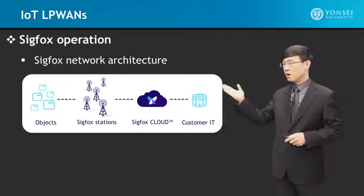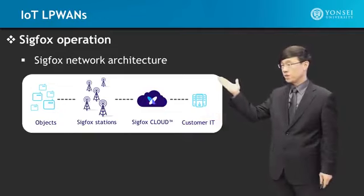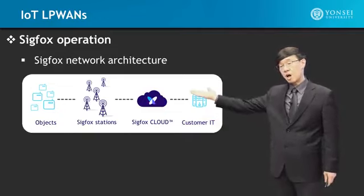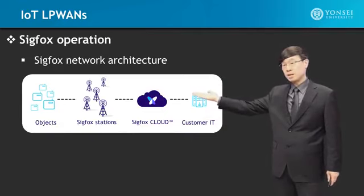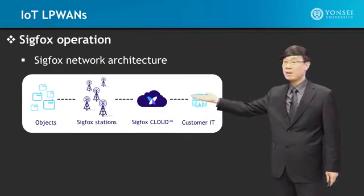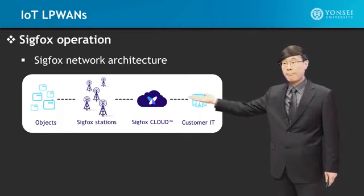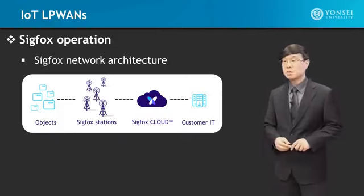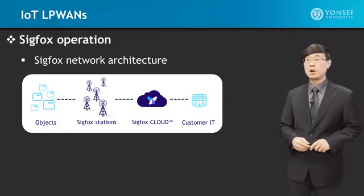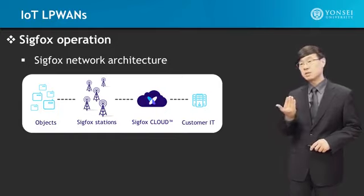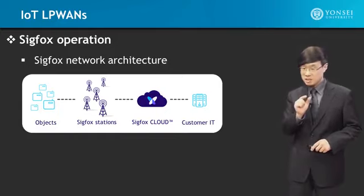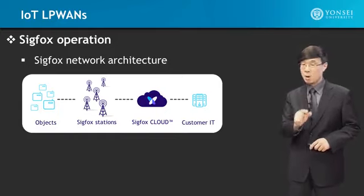Looking into the SIGFOX operation and network architecture, we have SIGFOX objects — these are objects that have SIGFOX modem chips on them. Then there are SIGFOX stations, which are the base stations and access points that pick up signals from these objects.